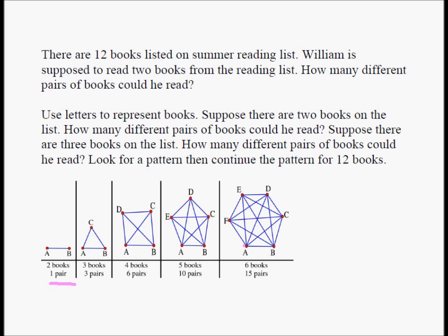Let's analyze this further. With six books A, B, C, D, E, F — how many pairs? A can be paired with B, C, D, E, F. B can be paired with C, D, E, F. Note we didn't count B again because A has already been paired with B. C can be paired with D, E, F. D can be paired with E, F. E can be paired with F. F has already been paired with everything, so we don't count anything twice. If you carefully count all these lines, you get 15 pairs.